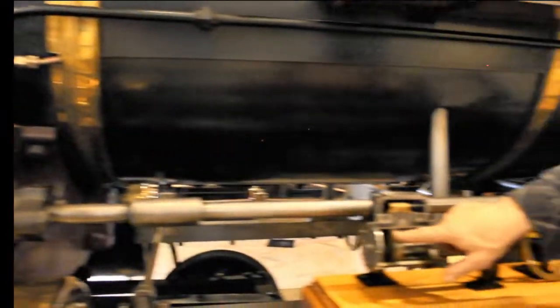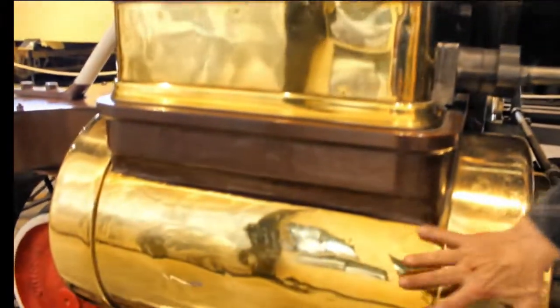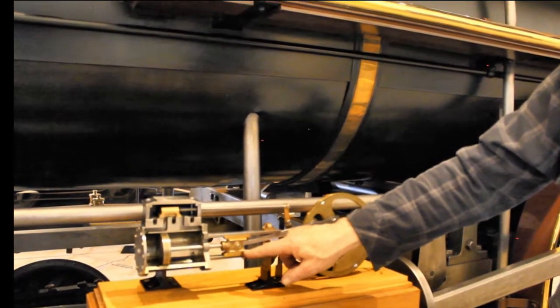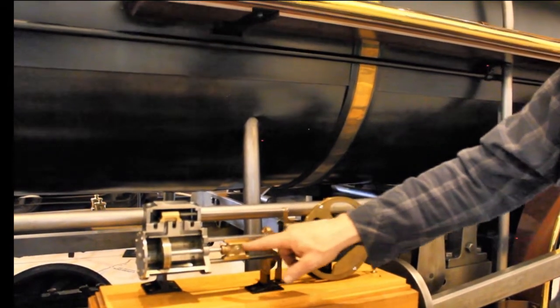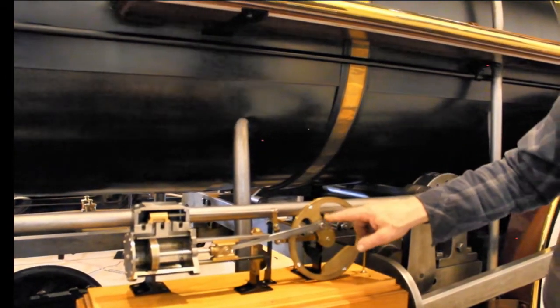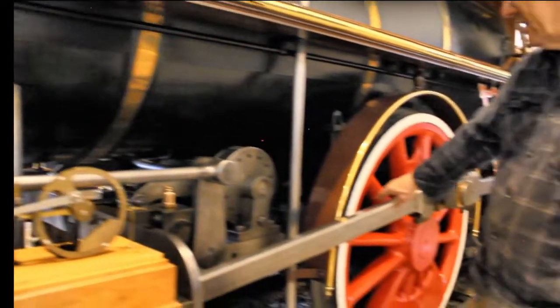We have the piston and the cylinder. That is this part down here. We have the piston rod that comes through to this device, which is called a crosshead. It moves back and forth in a straight line and has a pivot to a long rod that goes to the driving wheel. That would be this rod here.